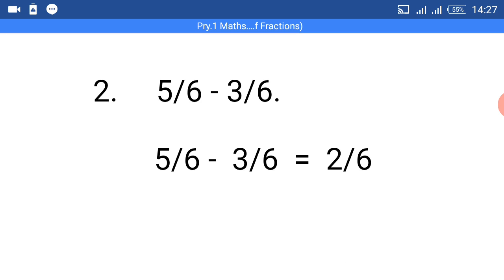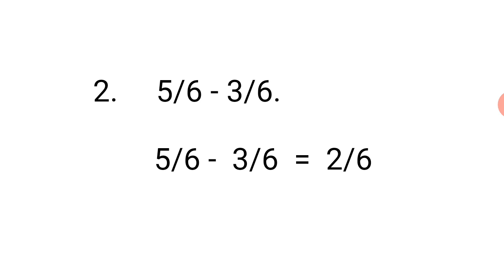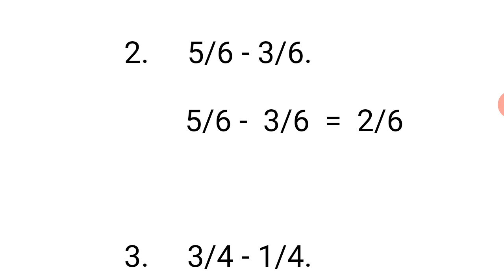Is it clear? Now let's go to number 2. Number 2 says 5 over 6 minus 3 over 6. We have to count 5 and take away 3, then write our answer over the denominator. We have 2 denominators here: 6 and 6. They are the same figure, so we are going to pick just 1 out of the 2 denominators.